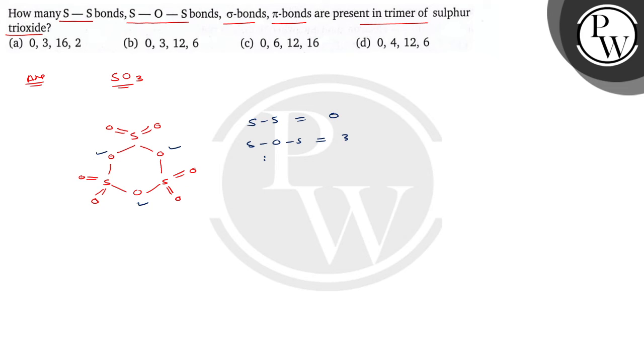For the sigma bonds, it is 1, 2, 3, 4, 5, 6, 7, 8, 9, 10, 11, and 12. So sigma bonds are total 12 sigma bonds.